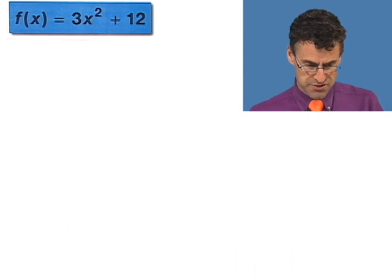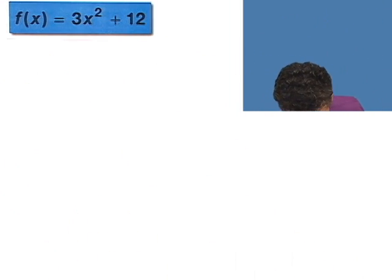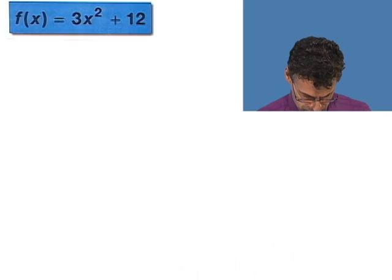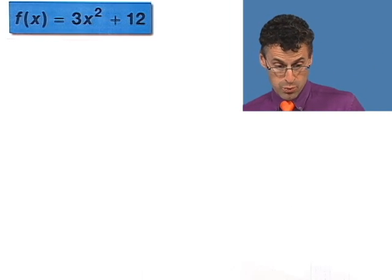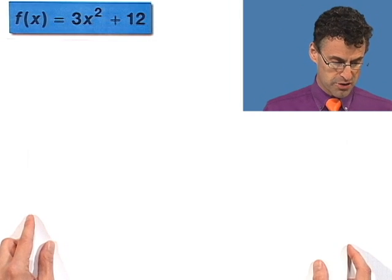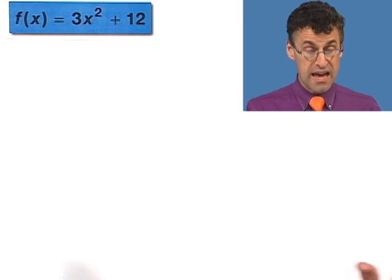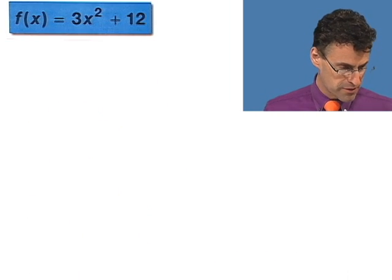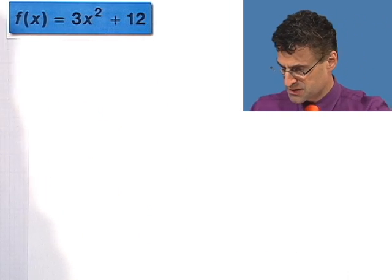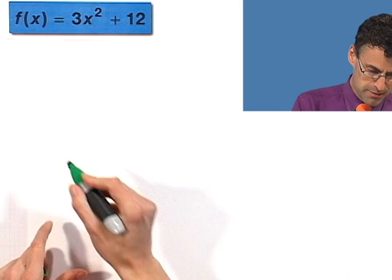OK, one more example. Let's take a look at the function f of x equals 3x squared plus 12. And I want us to find the real zeros of this, meaning where would the corresponding graph cross the x-axis. OK, so what do we do? Well, we set this thing equal to 0 and solve. Let's use green. I'm in a green mood.